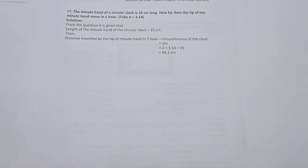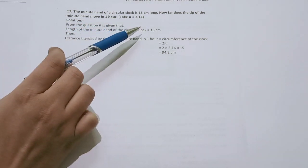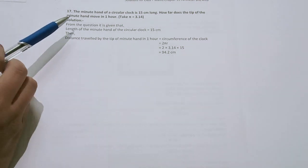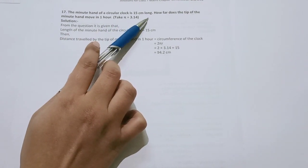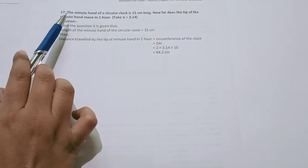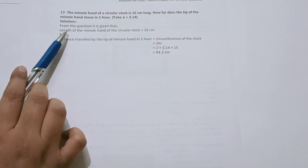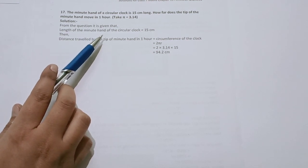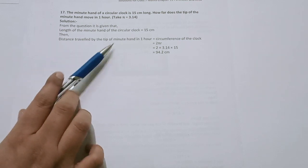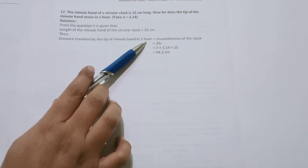Now the last question of this exercise, question 17: The minute hand of a circular clock is 15 centimeters long. How far does the tip of the minute hand move in one hour? Take pi equals 3.14. Given: the minute hand is 15 centimeters long. We need to find the distance the tip travels in one hour, so we find the circumference of the circle.